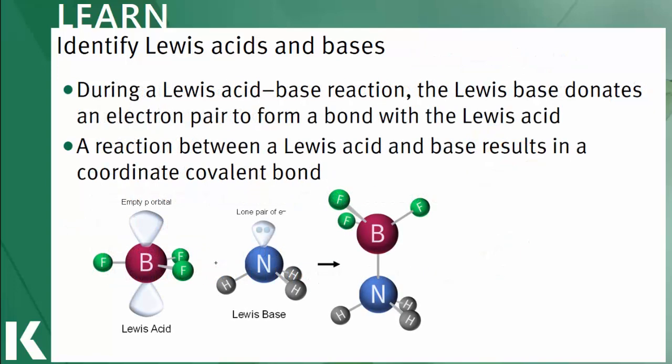In Lewis acid-base reactions, we're donating electrons to form coordinate covalent bonds, otherwise known as dative covalent bonds. Coordinate or dative just means that both electrons forming the bond is coming from one molecule rather than both molecules equally contributing to the bond, which is entirely in line with our Lewis definition.